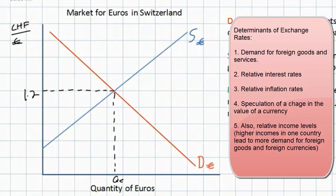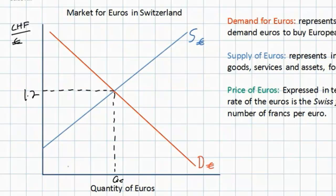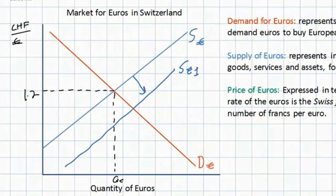Next, let's talk about some factors that can cause the supply of euros to change in Switzerland. The supply of euros represents individuals in Europe who buy Swiss goods, Swiss services, and Swiss assets, for which they must supply euros to the Swiss foreign exchange market. If anything changes that causes an inflow of foreign investment into Switzerland or an increase in demand for Swiss goods from European households, any of these things can cause the supply of euros to shift outwards. An increase in the supply of euros would cause the exchange rate of the euro to fall from 1.2 francs to perhaps 1 franc.